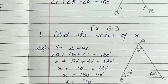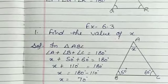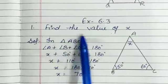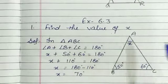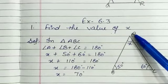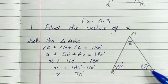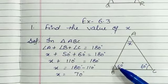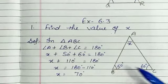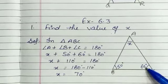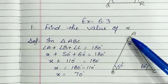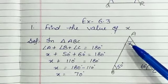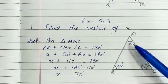Let's start exercise 6.3. Question No. 1: Find the value of X in triangle ABC. You have been given 2 angles — angle B is equal to 50 degrees, and angle C is equal to 60 degrees. Angle A is equal to X, the unknown angle you have to find.